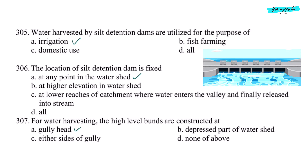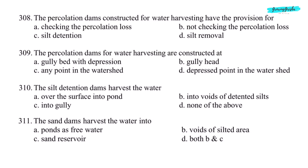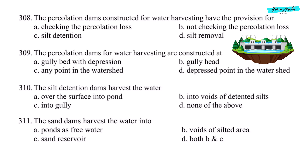Next question: percolation dams constructed for water harvesting have the provision for — option A, checking the percolation loss. Next question: percolation dams for water harvesting are constructed at — option B, gully head.